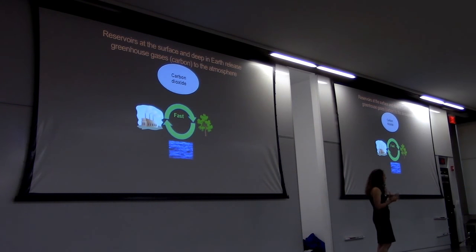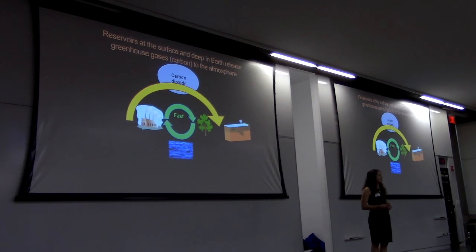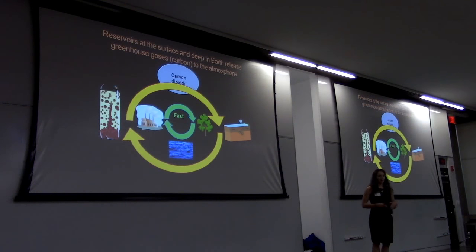It can transfer between these reservoirs, such as the burning of fossil fuels into the atmosphere, on pretty short timescales at the surface. But there's slower processes happening in the Earth that transfer carbon on timescales relevant for long-term climate change.